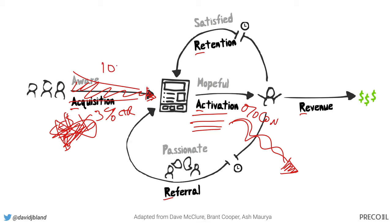Early on, even if you have 100 uniques a day, that should be enough to start understanding: if I change something in my value proposition, does it have a meaningful impact? Less than 100 a day coming to your new product or service makes it really tough to statistically determine whether any changes made a real difference, because it's so spiky. And if you can't get 100 a day consistently, it's really difficult to do.